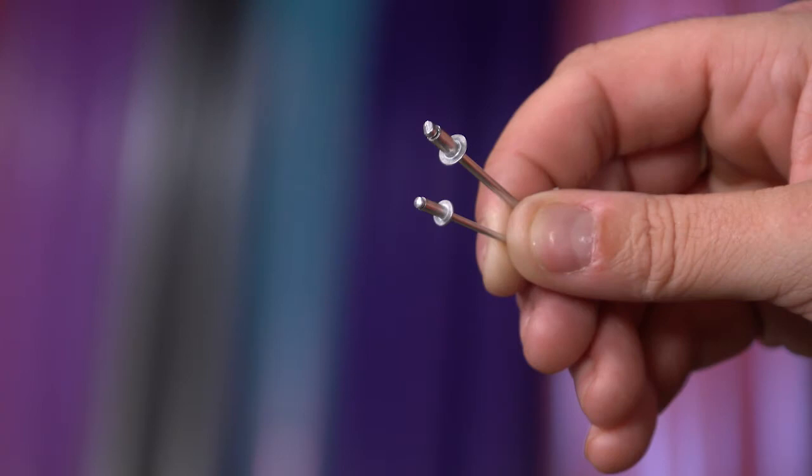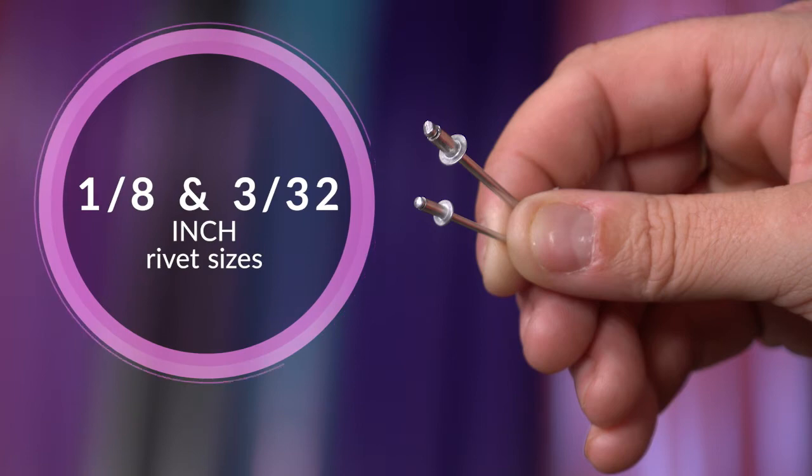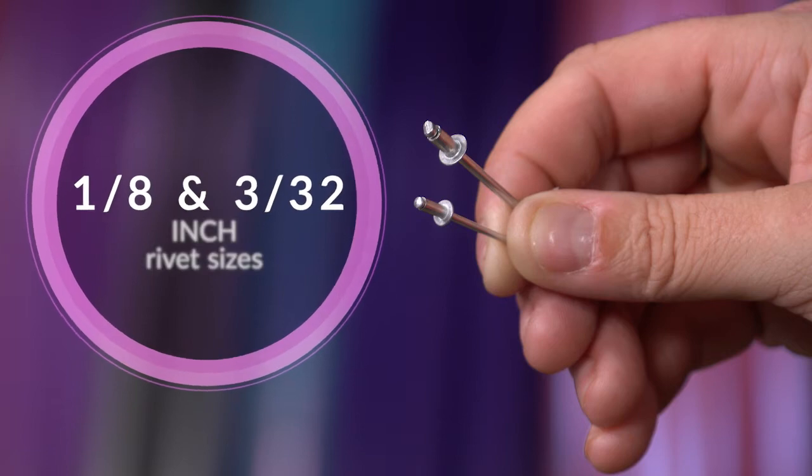Hoopology sells two sizes of rivets: 1/8 inch and 3/32 inch tiny rivets. Both sizes of rivets can be used for any size hoop, but we tend to use tiny rivets for 3/4 inch OD and under. The difference is that the tiny rivet is smaller and lighter.